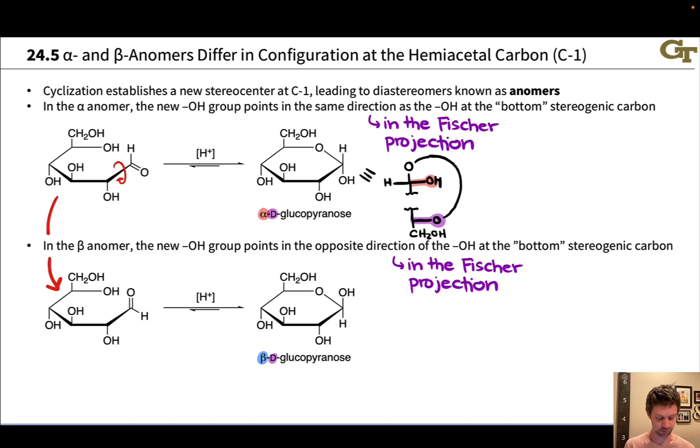The only difference in the beta anomer is in the configuration of the anomeric carbon. And so the bottom most stereocenter looks exactly the same in the Fischer projection. The only difference is that newly created hydroxyl group now points to the left instead of to the right. And this is the beta anomer. Now, a couple things about this. You go out there, you read about this online, you're going to pick up all kinds of nonsense.